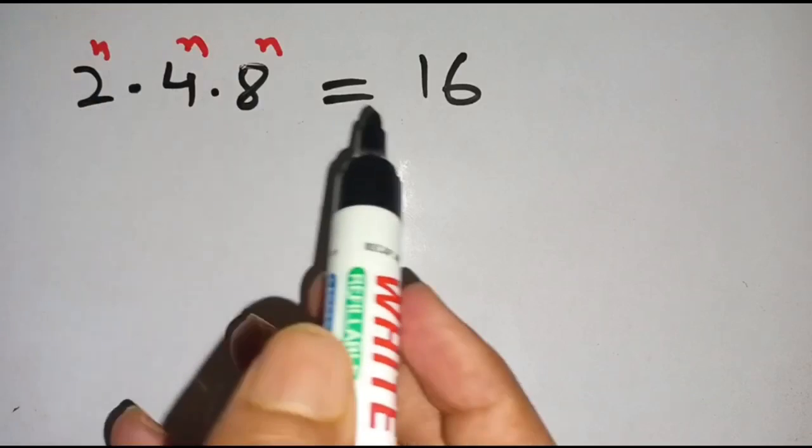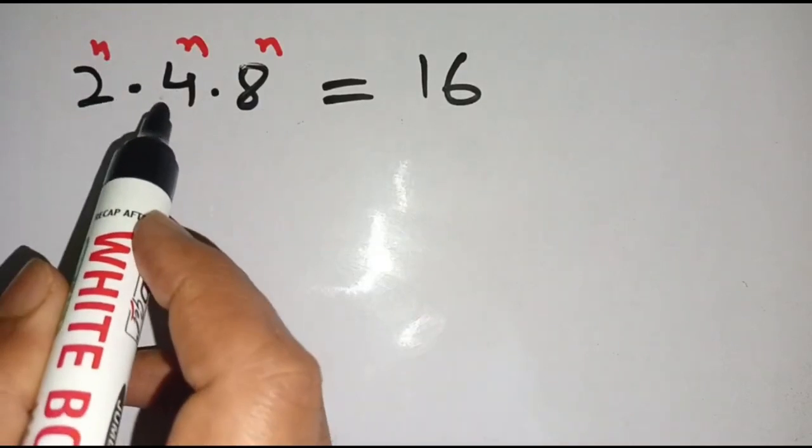Hello everyone, in today's video we are going to solve this exponential problem: 2 power n times 4 power n times 8 power n is equal to 16.